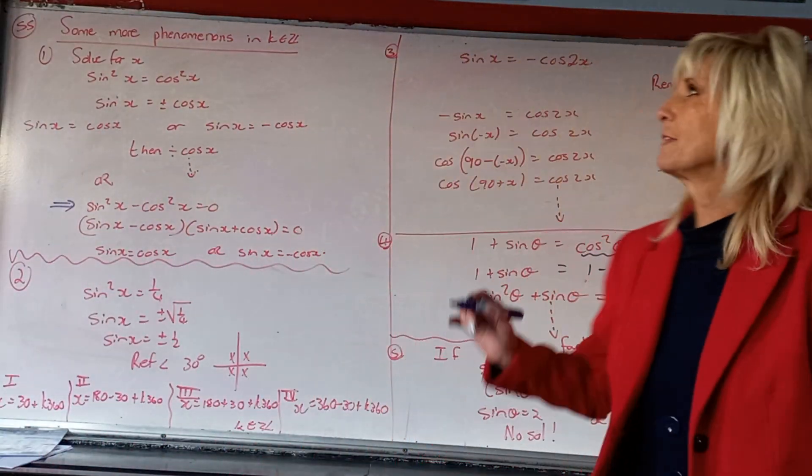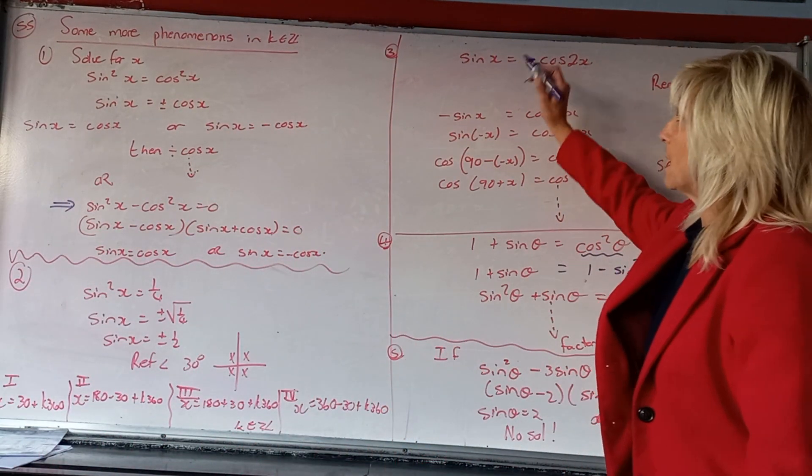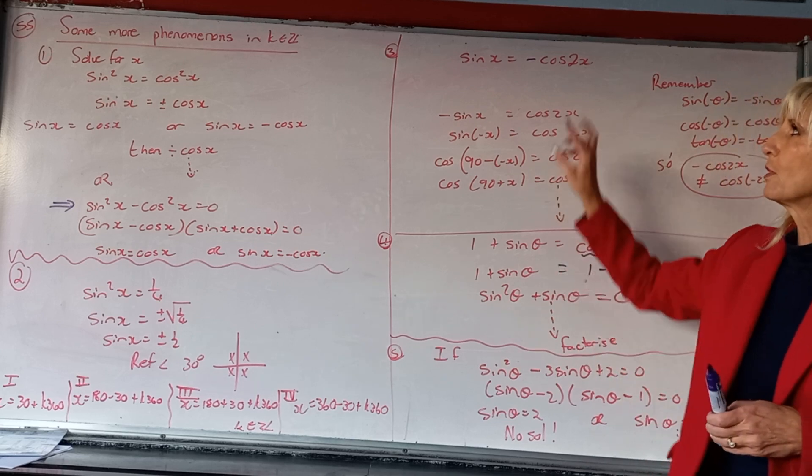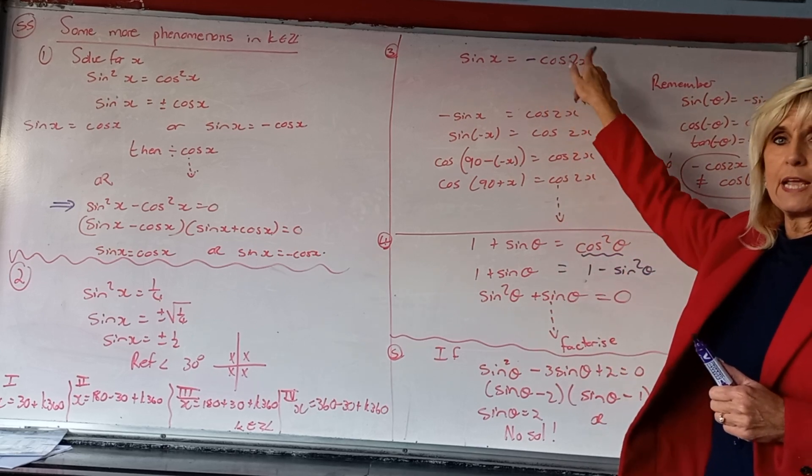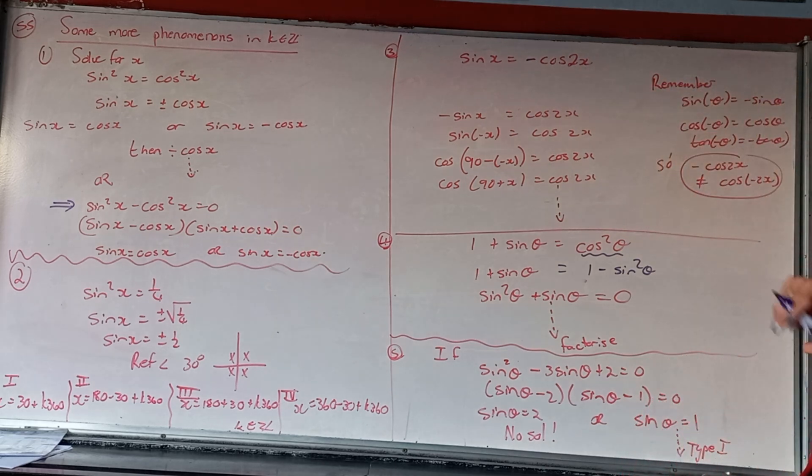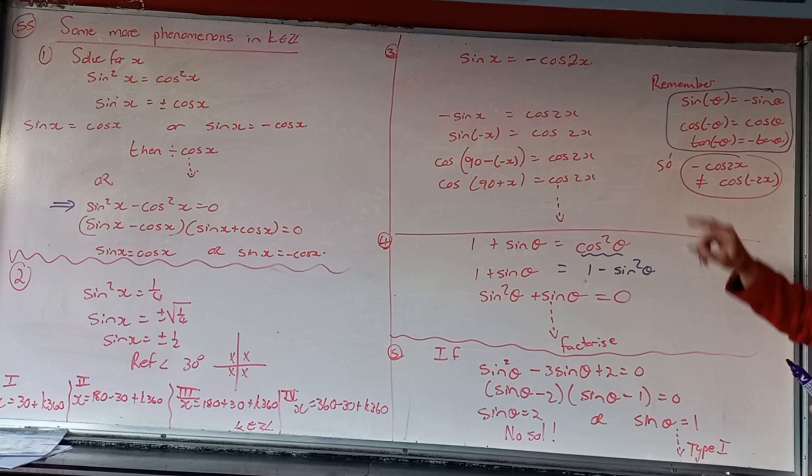Something else that can happen is if there's a minus in front of our type 3 sums, we've got the angles that are different. Now a negative angle and a negative ratio, we've heard about that in our negative angle reduction formulas. If there's a negative angle, the angle becomes positive, but the ratio becomes negative.